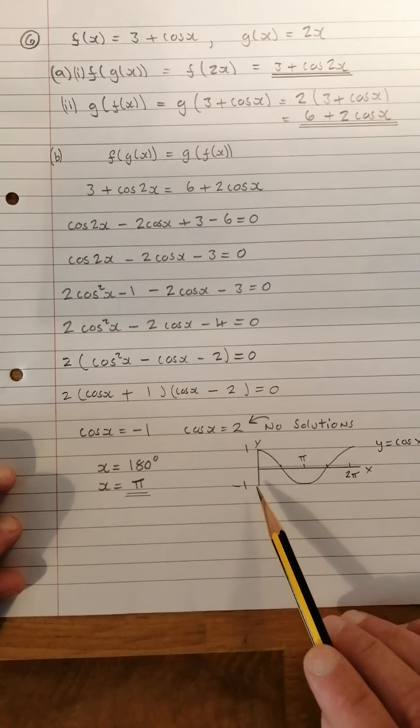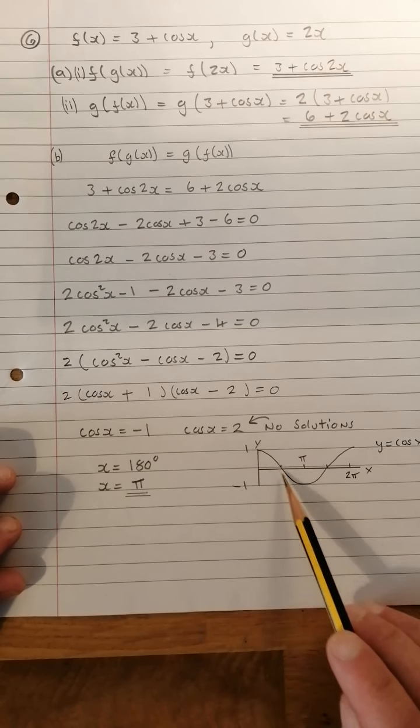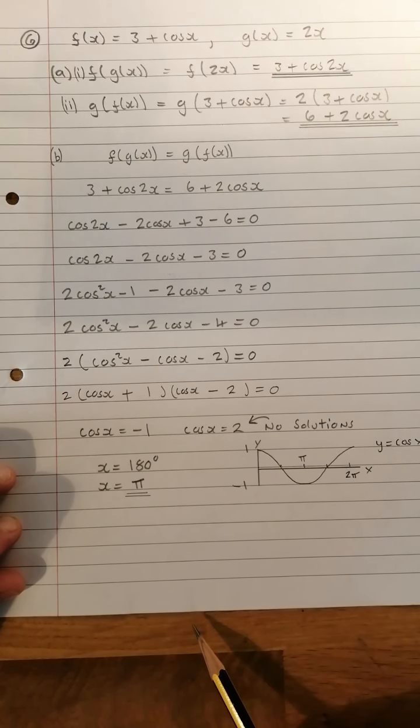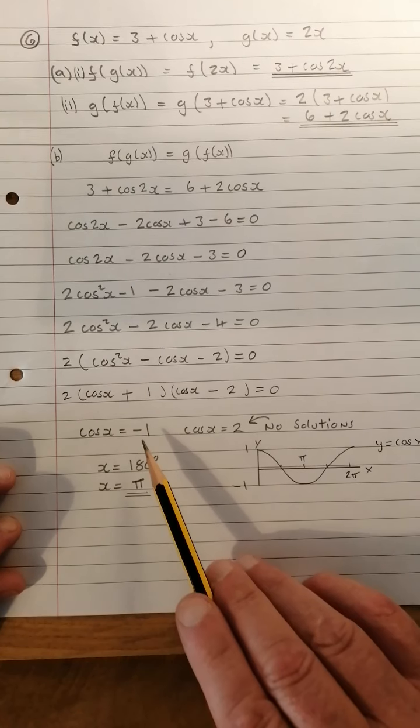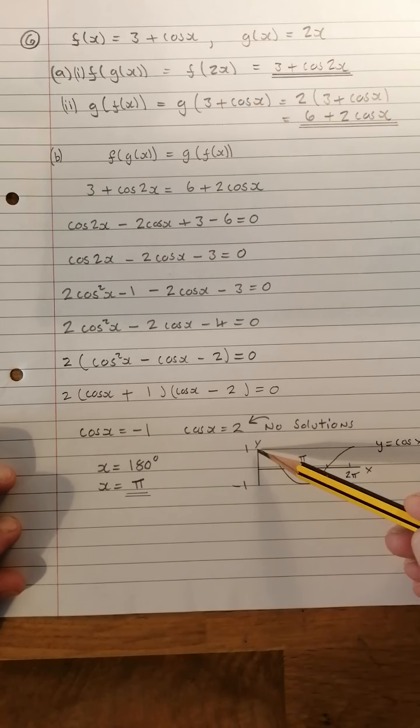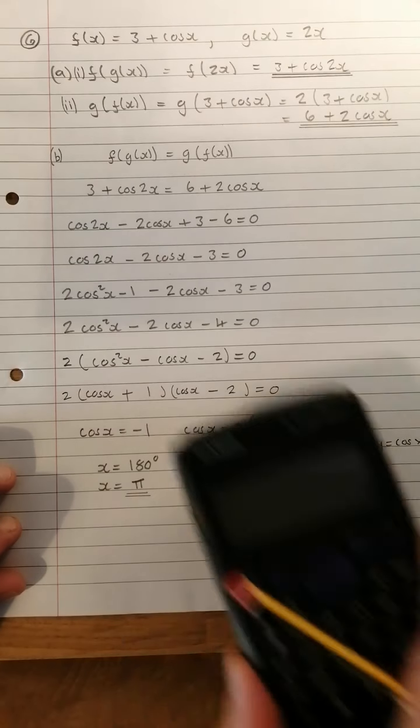Now cos x is never equal to 2, it just goes up to 1 and down to minus 1, as you can see from my little diagram there that I drew there. So where's cos x equal to minus 1? Well, if you remember your cos graph, it's at 180 degrees, or hopefully you recognize that as π.